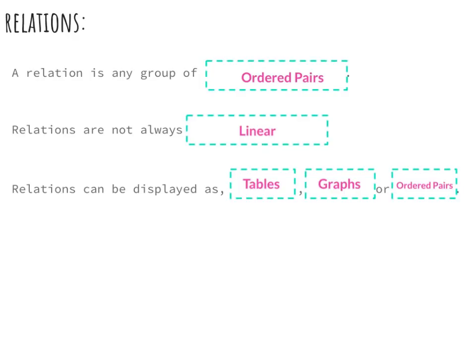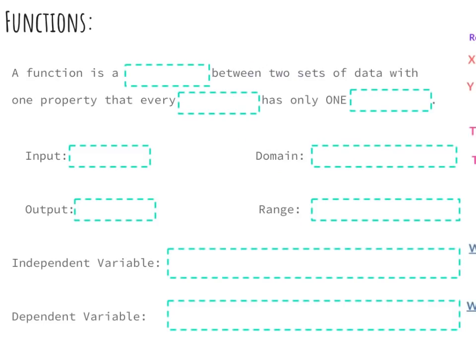Now let's take a look at a special type of relation known as a function. Functions are a very important term to understand — one of the cornerstones of things you need to know not only this year, but moving forward through mathematics. A function is a relationship between two sets of data with one property: every input has only one output.